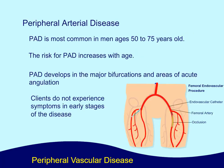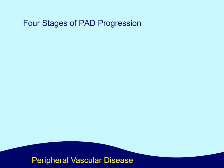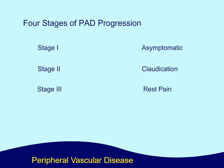Peripheral arterial disease, PAD, is most common in men ages 50 to 75 years old. The risk for PAD increases with age. PAD develops in the major bifurcations and areas of acute angulation. Clients do not experience symptoms in early stages of the disease. There are four stages of PAD progression: Stage 1 is asymptomatic, Stage 2 is claudication, Stage 3 is rest pain, and Stage 4 is necrosis and gangrene.